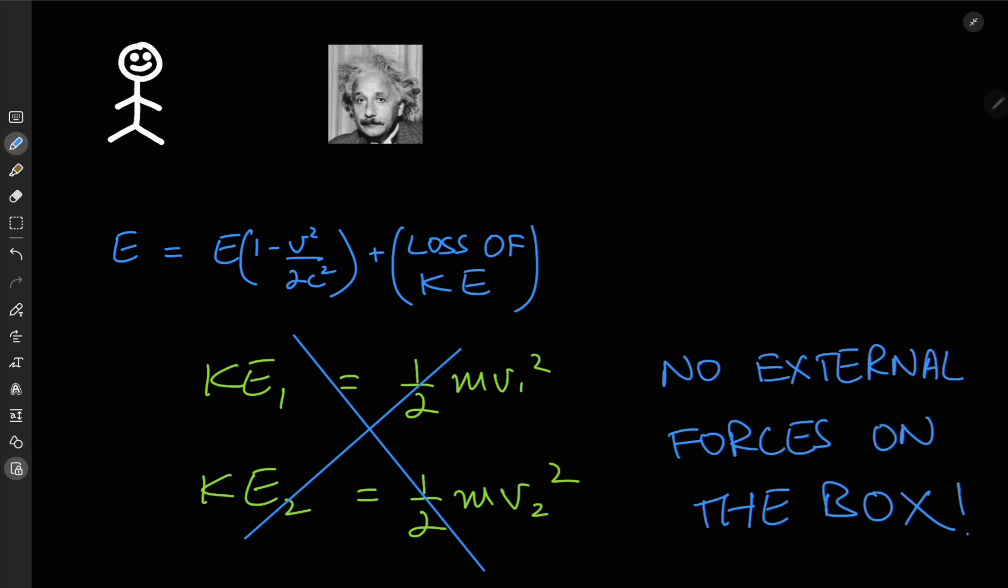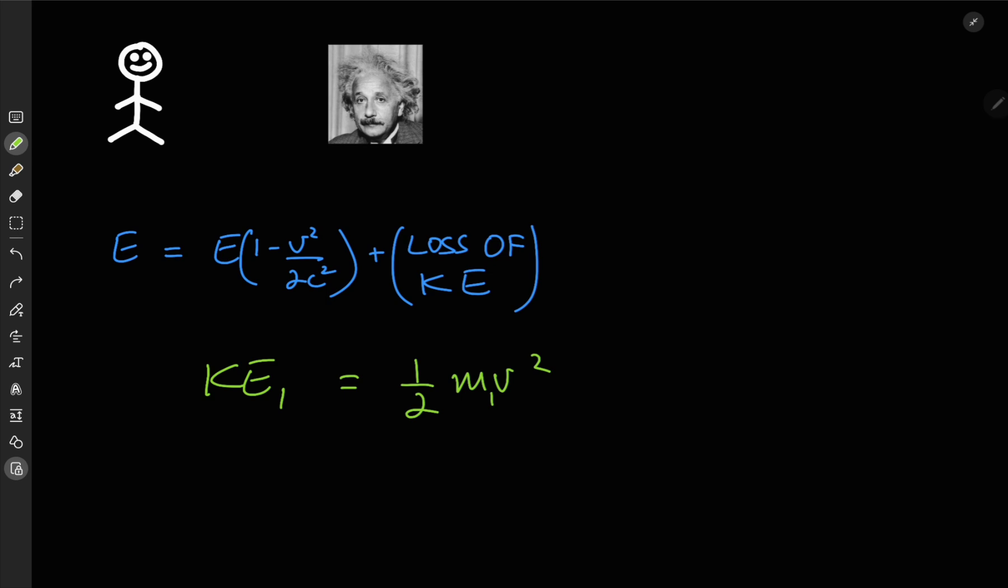so there are no external forces to cause any changes in the velocity of the box. So the only explanation left is a change in the mass of the box from M1 to M2 resulting in a change in its kinetic energy.